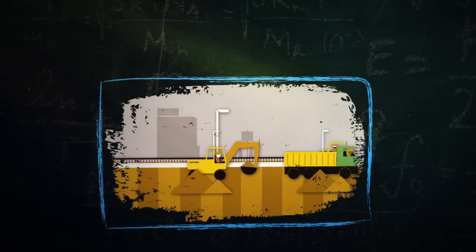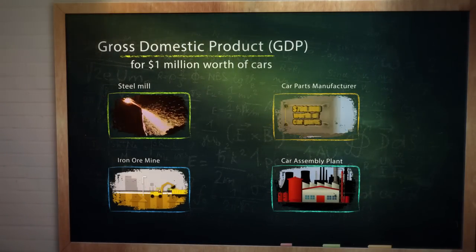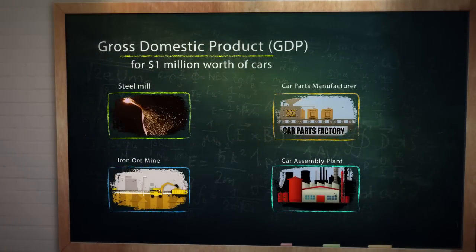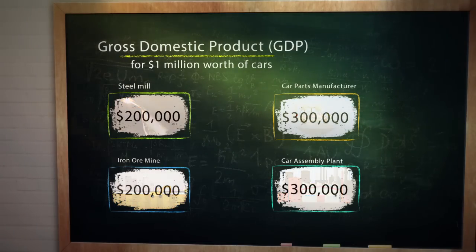Each of these industries involved in the process – harvesting the ore, making the steel, making the car parts, etc. – has its own output and intermediate consumption, which also means that each industry has its own GDP.